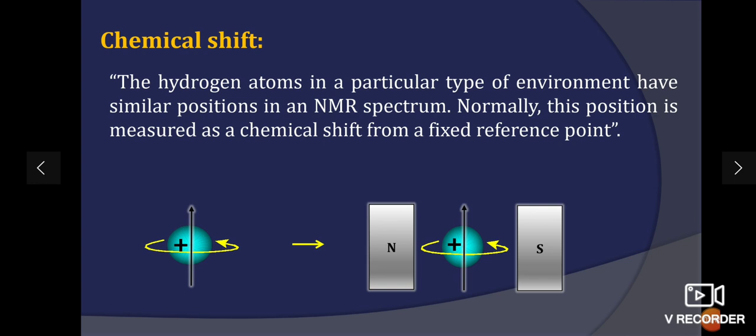This shielded proton requires higher magnetic field and absorption occurs at upfield absorption. If the induced nuclear field or secondary nuclear field reinforces with the applied field at the proton, then the applied field felt by the proton is increased more and the proton is said to be deshielded, which shifts the absorption to downfield absorption.